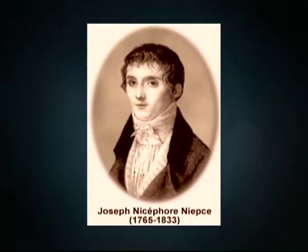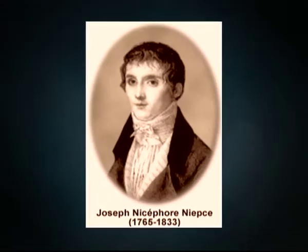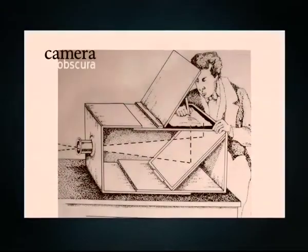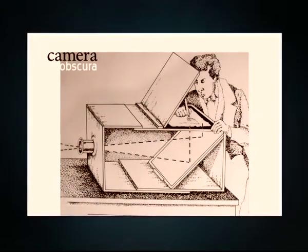The earliest known surviving heliographic engraving, from 1825, was printed from a metal plate made by Joseph Nicéphore Niépce with his heliographic process. The plate was exposed under an ordinary engraving and copied it by photographic means. This was a step towards the first permanent photograph from nature, taken with a camera obscura in 1826.